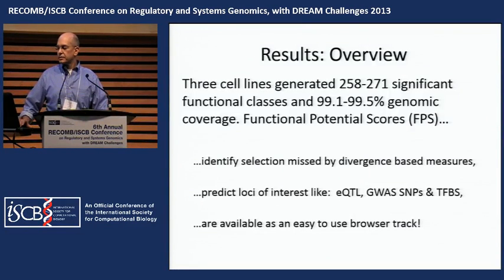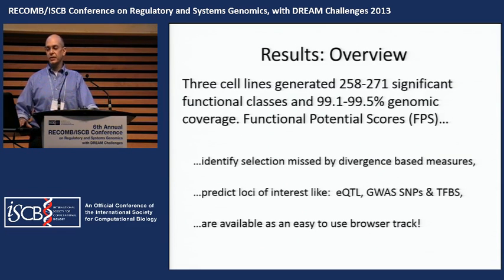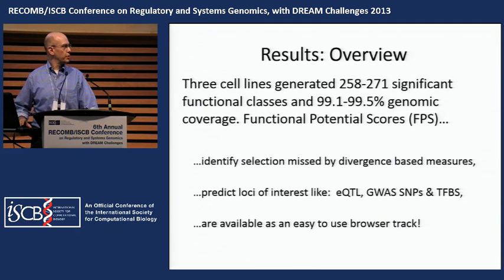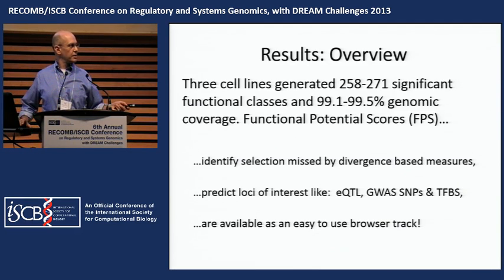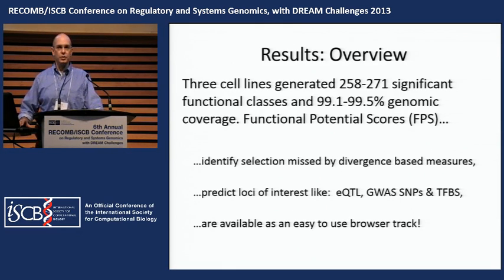Our three cell lines generated between 258 and 271 significant functional classes, providing 99.1 to 99.5 percent genomic coverage. The functional potential scores identify selection missed by divergence-based measures, predict loci of interest like eQTL and GWAS SNPs, and are available as an easy-to-use browser track.